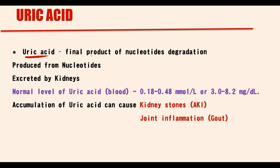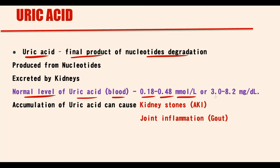Uric acid is a product of nucleotide degradation. The normal level of uric acid in the blood is 0.18–0.48 mmol per liter, or 3 to 8.2 mg per deciliter.